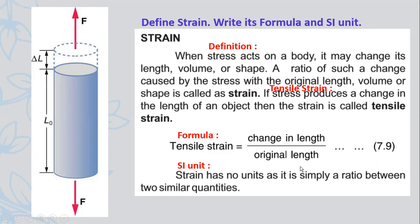So stress is basically a force that acts on any surface area. When the stress acts on the body, the force acts on the surface area and the body will change in length, volume, and shape. The ratio of the change to the original value is basically strain. If stress changes the length, we call it tensile strain. Here you can see an object whose original length is L0. As stress or force is applied, the change in length is delta L, and the ratio delta L over L0 is the strain.